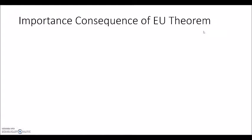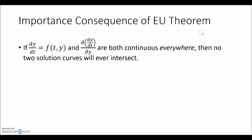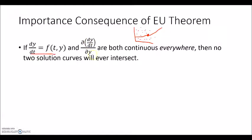The most important consequence of this theorem is: if dy/dt and the partial of dy/dt are both continuous everywhere, then no two solution curves will ever intersect. After all, if every initial condition in the ty-plane has a unique solution going through it, then no two curves can pass through the same point — because that would imply a point does not have a unique solution, contradicting our conditions.